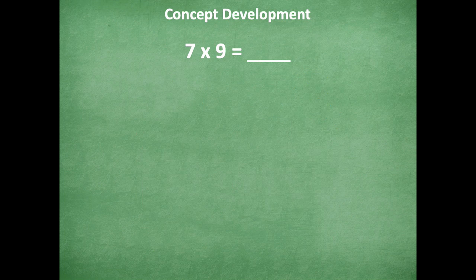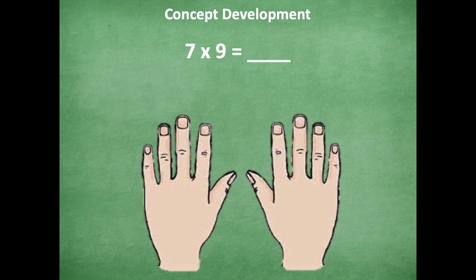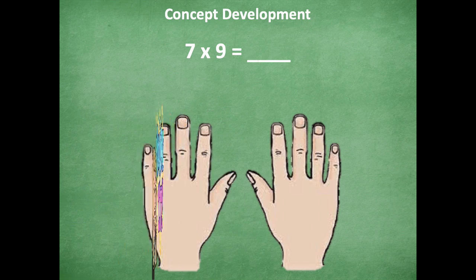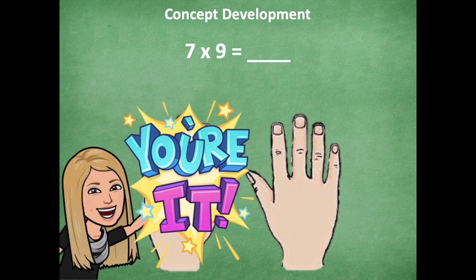Yeah. All right, let's look at another one. So we have 7 times 9. So do the same thing. Go to that seventh finger and go ahead and count across. Go ahead and pause the video, do that, and then click play when you're ready to go over it together.